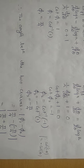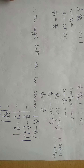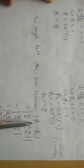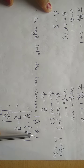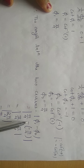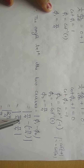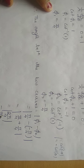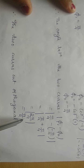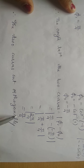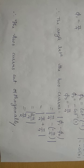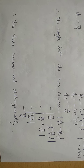Now finding the angle between the two curves: φ₁ = π/4 and φ₂ = -π/4. The angle between them is φ₁ - φ₂ = π/4 - (-π/4) = π/4 + π/4 = 2π/4 = π/2. Since the answer is π/2, the two curves cut orthogonally. Thank you.